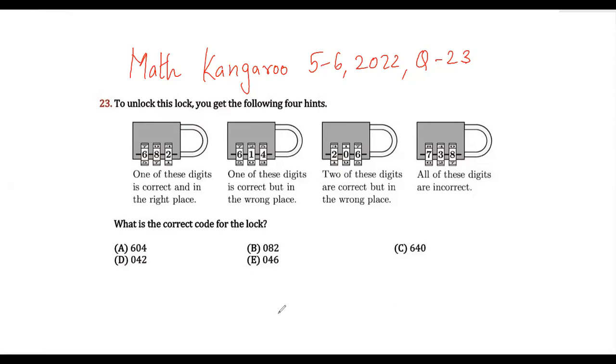One of these digits is correct and in the right place. One of these digits is correct but in the wrong place. Two of these digits are correct but in the wrong place. All of these digits are incorrect.